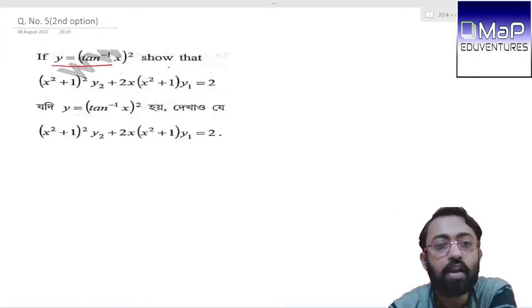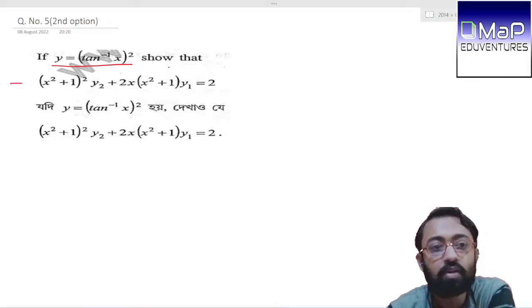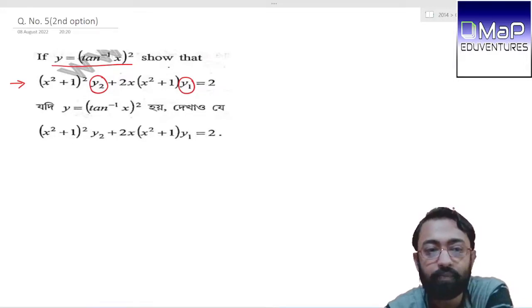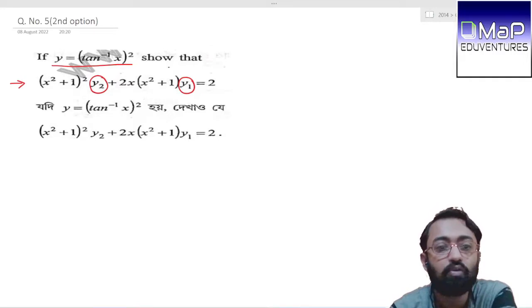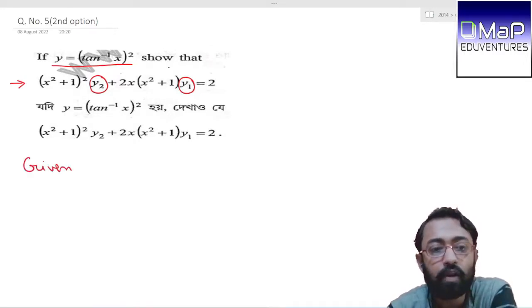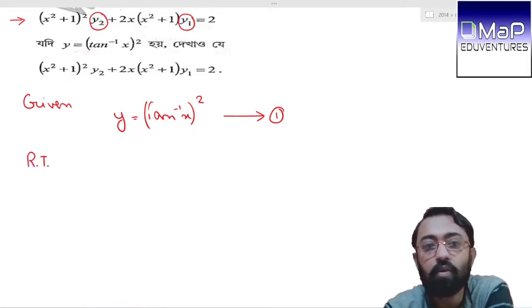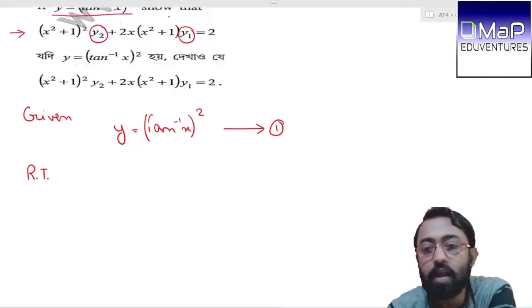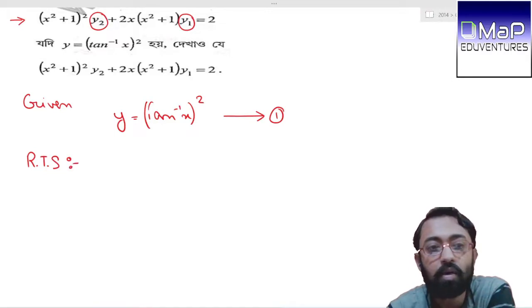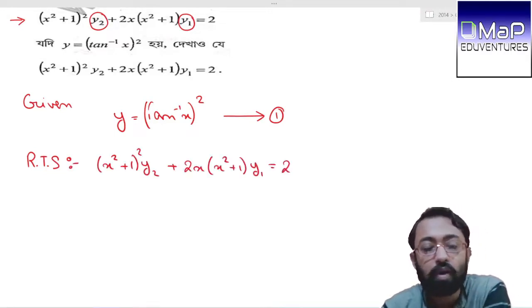If y equals tan inverse x whole square, then we have to show that this expression equals 2. Here the question is a proof where we need to find y2 and y1, that is the second order derivative and first order derivative. We need to differentiate twice. Given is what we have, and what we are required to prove or show.